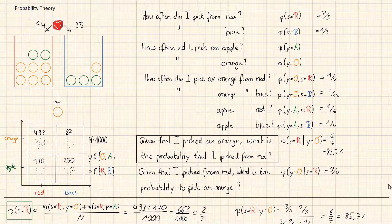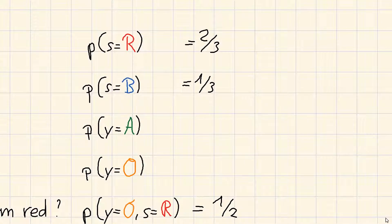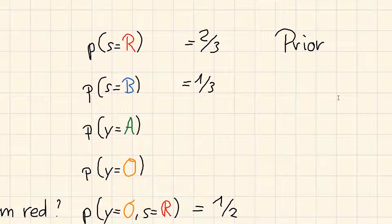The terminology is as follows. Every time we want to know how often one source is picked in general, we call that prior probability. Because we calculate this prior of observing the data.